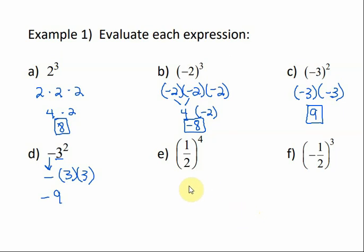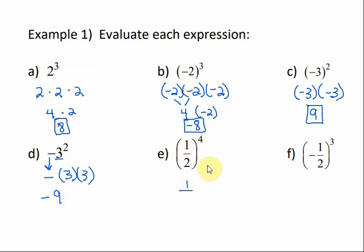For E, we have a fraction being raised to a power. As long as the whole fraction is in parentheses, the whole fraction gets raised to that power. So this is like negative 1 half, 4 times. I'll do each part separately. 1 to the 4th power: 1 times 1 times 1 times 1 would be 1. And 2 to the 4th power: 2 times 2 is 4, times 2 is 8, times 2 is 16.